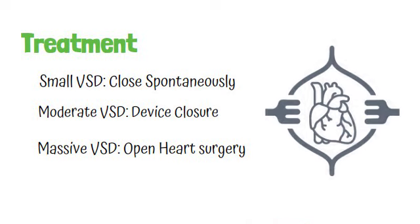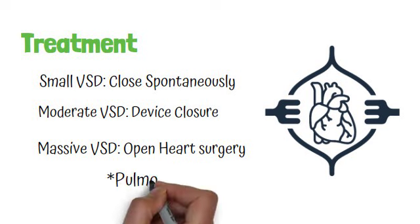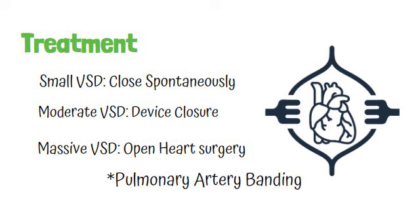Open heart surgery involves opening the thorax and the heart. If the child is too small to undergo a major procedure like open heart surgery, then palliative surgery can be done to avoid complications like pulmonary artery hypertension. The palliative surgery performed is called pulmonary artery banding, which is done to decrease pulmonary blood flow and thereby avoid pulmonary hypertension and the development of Eisenmenger syndrome.